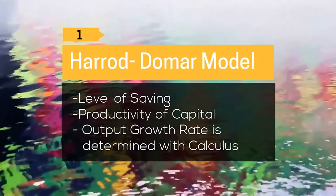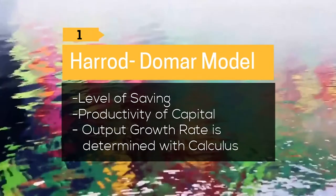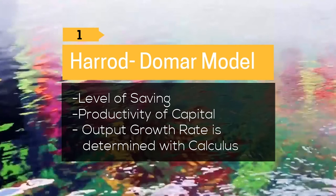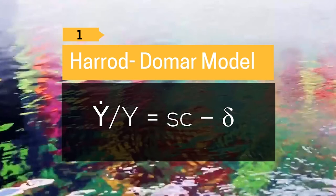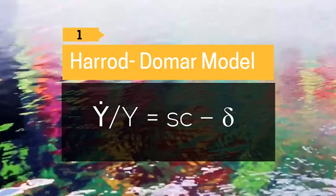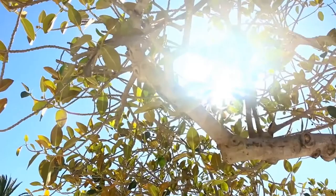The output growth rate is determined with calculus using dot notation for the derivative of a variable with respect to time. This equation shows the output growth rate. Here, Y-dot divided by Y is the output growth rate, S is the savings rate, C is the marginal product of capital, and delta is the rate of depreciation of capital stock.